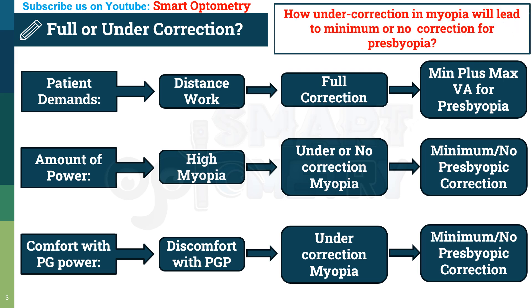Now another question arises: how will under-correction in myopia lead to minimum or no correction for presbyopia? Let's see in the next slide.